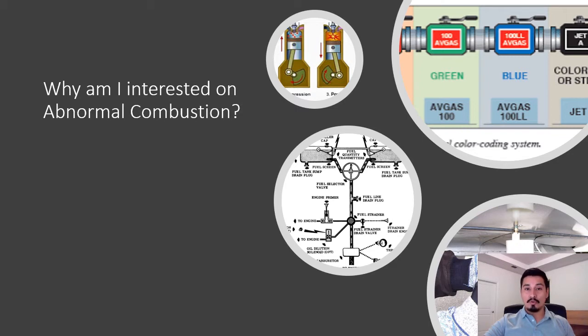One of the topics I teach is aircraft systems, and within aircraft systems we have to talk about the engine. The engine we use in general aviation is a reciprocating engine. The reciprocating engine can have problems where the combustion is not okay due to overheating or carbons on the spark plugs. These are considered abnormal combustions, usually pre-ignition and detonation.